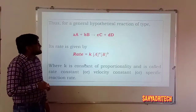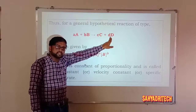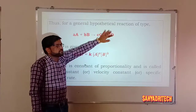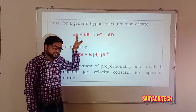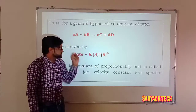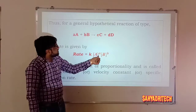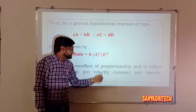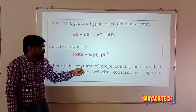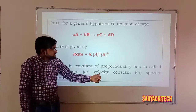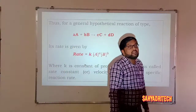For a general hypothetical reaction aA + bB → cC + dD, where A and B are the reactants with stoichiometric coefficients a and b, according to the Law of Mass Action: rate = K[A]^a[B]^b. Here K is the proportionality constant, called the rate constant — also known as velocity constant or specific reaction rate.